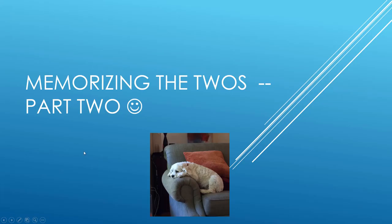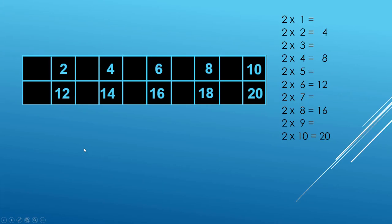Memorizing the twos, part two. These are the twos times tables. In part one we practiced the odd ones: two times one is two, two times three is six, five times two is ten, two times seven is fourteen, nine times two is eighteen.